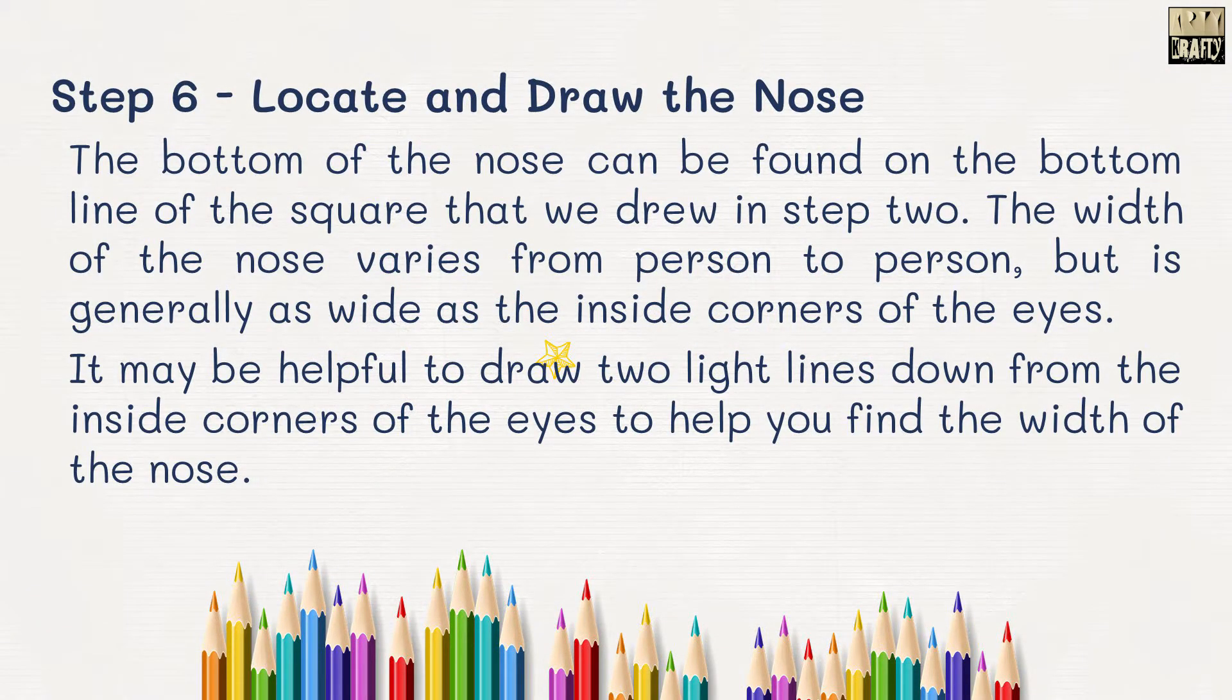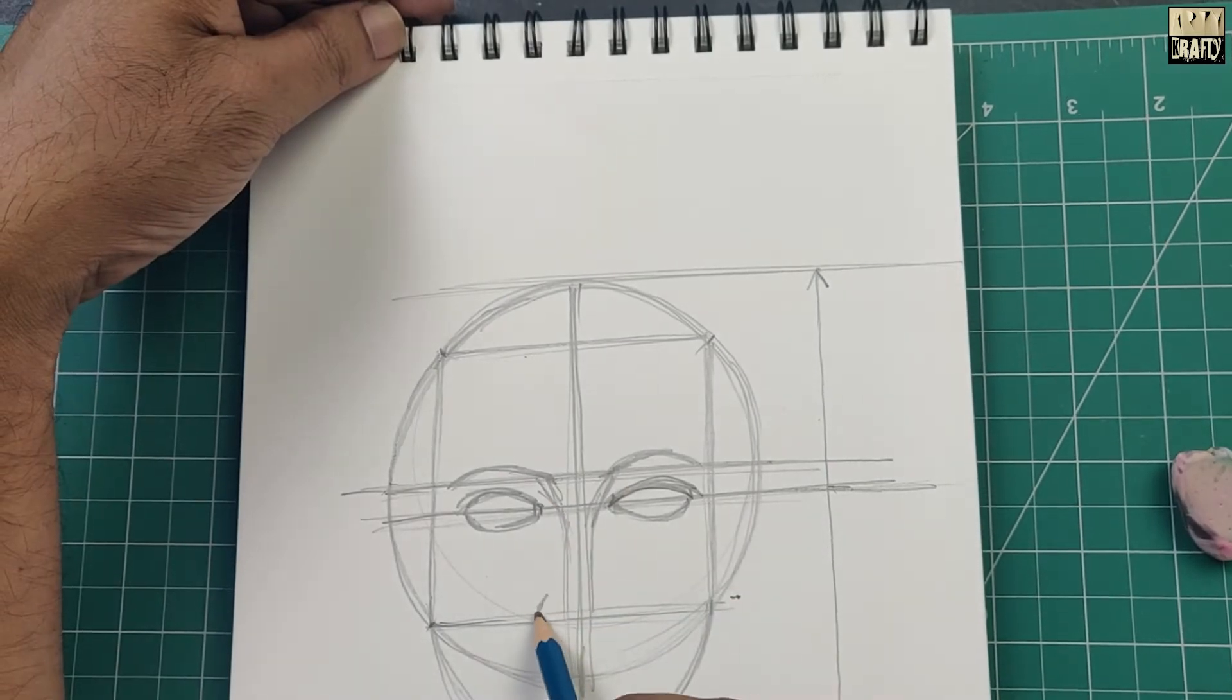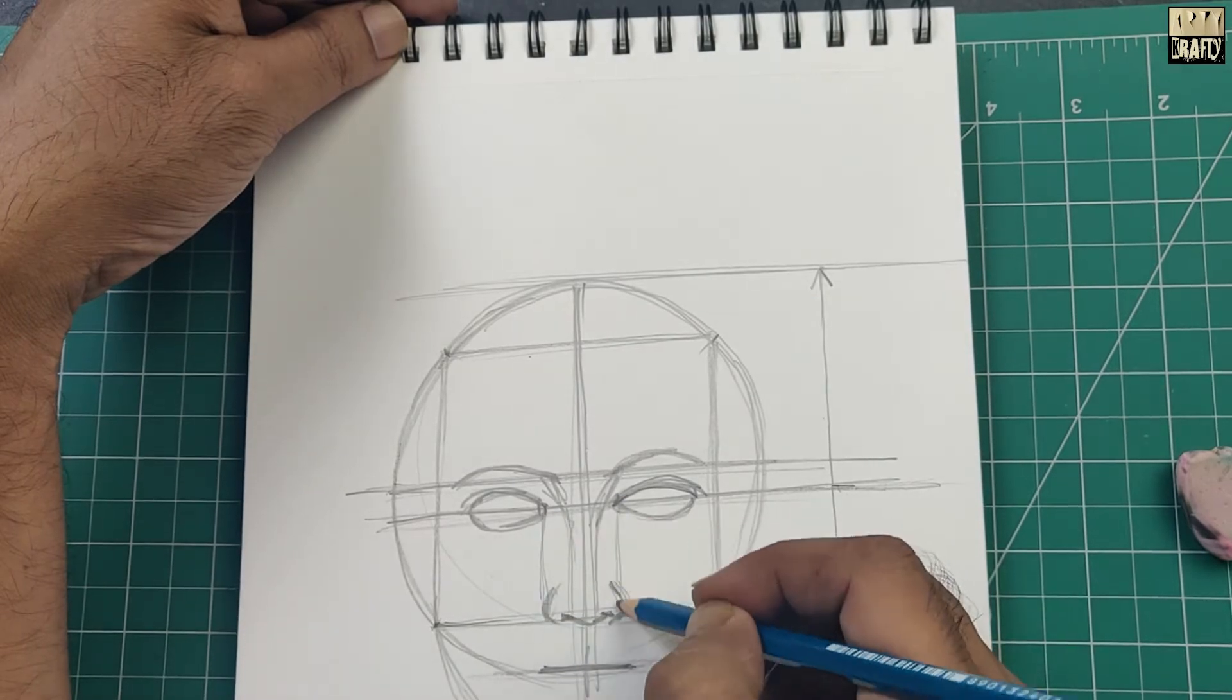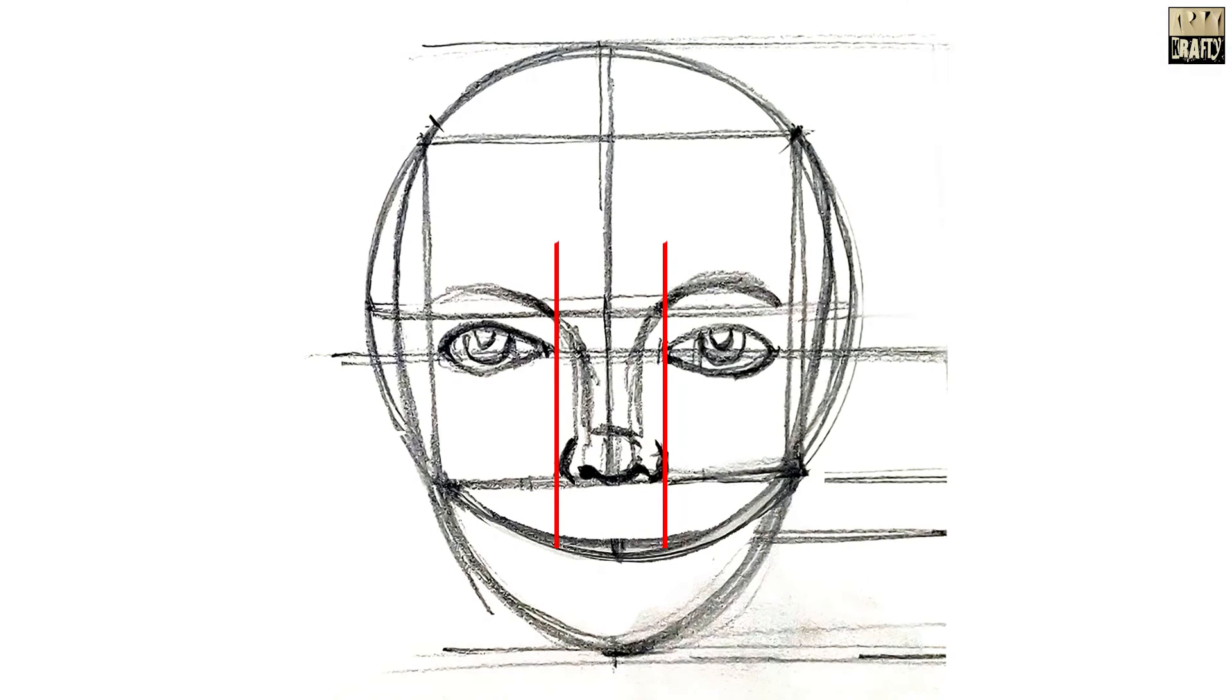Step 6. Locate and draw the nose. The bottom of the nose can be found on the bottom line of the square that we drew in Step 2. The width of the nose varies from person to person but it is generally as wide as the inside corners of the eyes.